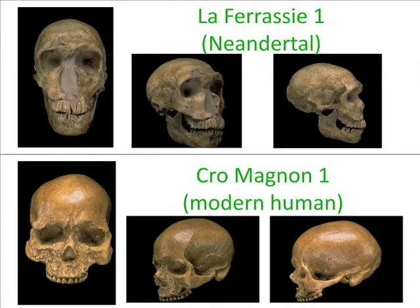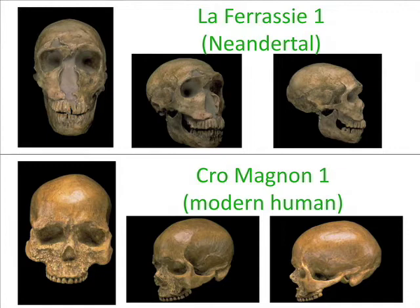These Neanderthals have a very characteristic morphology: this brow ridge, an occipital bun, a head that's lower and slung back more, a bigger jaw. And they are different from modern human morphology as exemplified by Cro-Magnon, who lived almost at the same time as the Neanderthals. This Cro-Magnon is anatomically modern human — this could be me or you, just someone who lived a long time ago, perhaps your great-great times 2,000 grandfather.